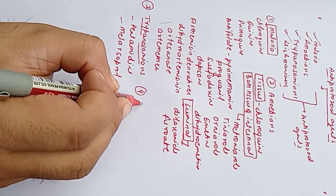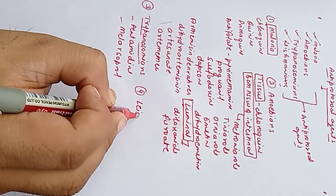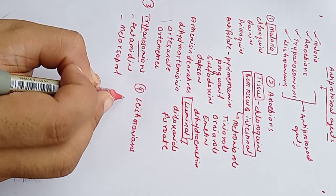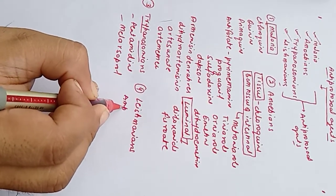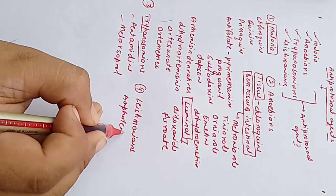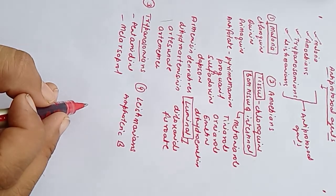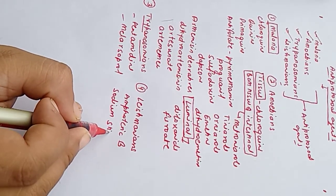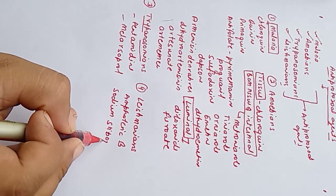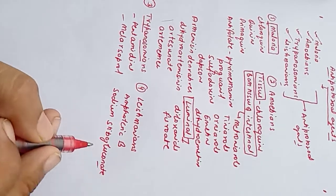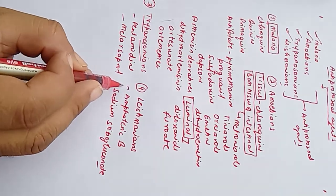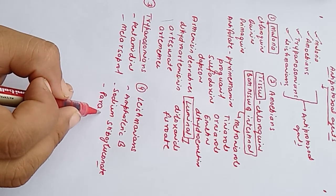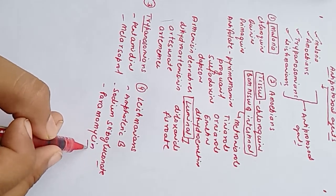The drugs used for the treatment of kala-azar or leishmaniasis are amphotericin B, which we have also discussed in antifungal lessons, sodium stibogluconate, and paromomycin. These are the drugs used in the treatment of leishmaniasis.